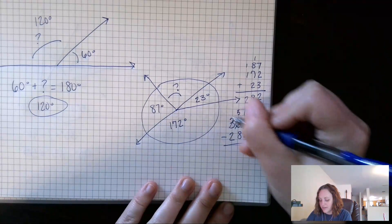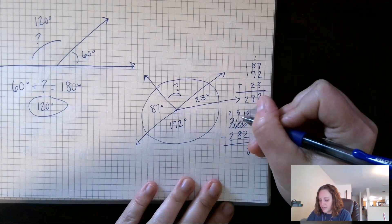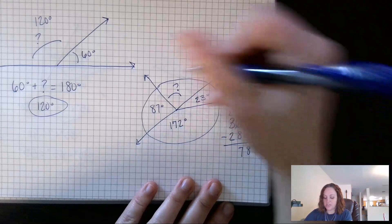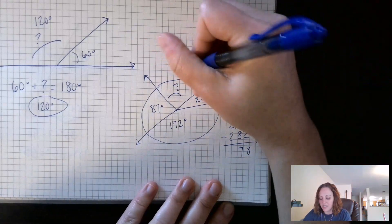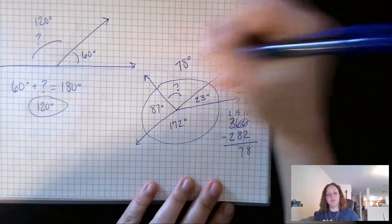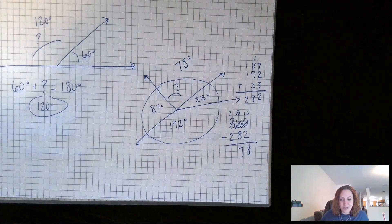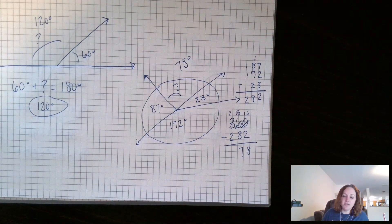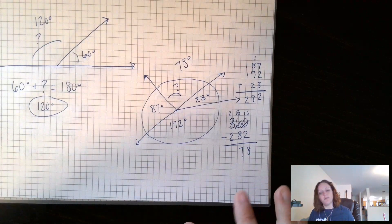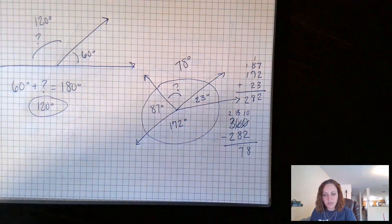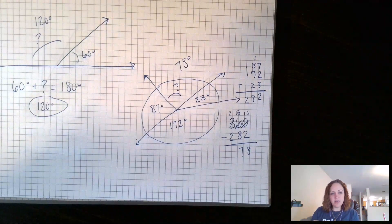360 minus 282 — regrouping: that turns into a 10, then a 15; 10 minus 2 is 8, 15 minus 8 is 7, and the hundreds give 0 — wait, 78 degrees. So my unknown angle is 78 degrees. I took what I knew and used it to find what I didn't know.